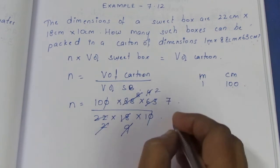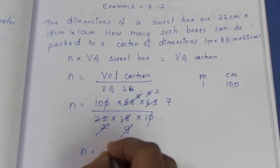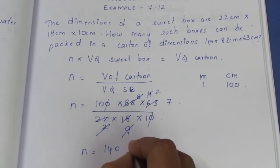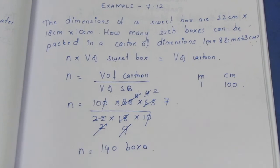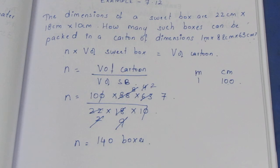Now multiply: 10 × 2 × 7. So n equals 7 × 2 which is 14, times 10, equals 140 boxes. So in total, 140 boxes can be packed. That is the solution. Thank you.